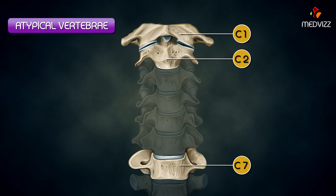The two superior most cervical vertebrae and the seventh cervical vertebrae are atypical vertebrae. The atlas vertebra, C1, also called the atlas, is unique in that it has neither a body nor a spinous process. This ring-shaped bone has paired lateral masses.